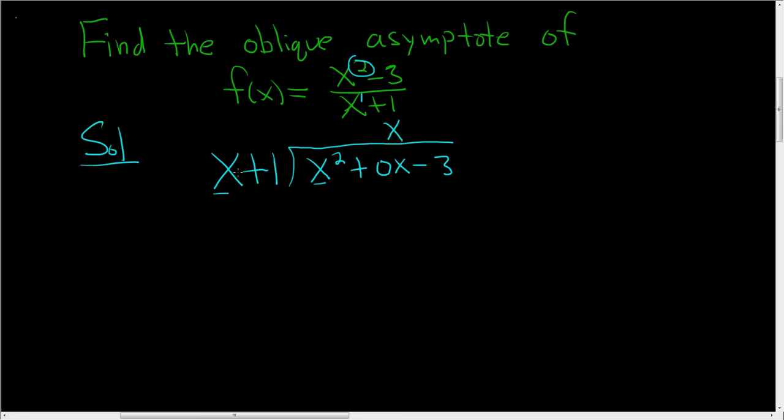Then x times x is x squared. x times 1 is positive x. Now, a lot of people switch the signs. What I like to do is draw a little line, put a giant minus sign here, and put parentheses.